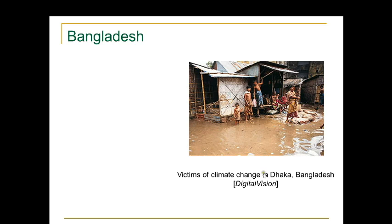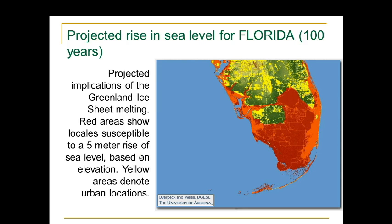Here we have a picture of children in Dhaka, Bangladesh, showing how their neighborhood is flooded. Here is a picture of the projected sea level rise in Florida for 100 years from now. Anything shown in red will be underwater — there's this lovely island shown on the map.